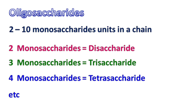Oligosaccharides are the carbohydrates that have 2 to 10 monosaccharide units linked together to form a chain. Depending on the number of monosaccharide units present, oligosaccharides are classified as disaccharides for 2 monosaccharides, trisaccharides for 3 monosaccharides, and so on. Examples of disaccharides include sucrose, lactose, and maltose.